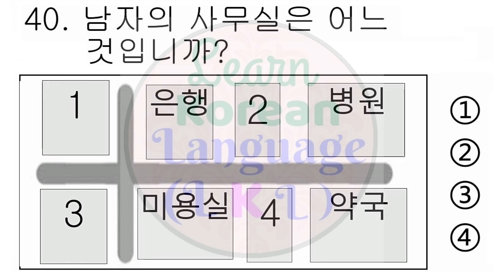39번. 가족이 모두 몇 명이에요? 다섯 명이에요. 저하고 남편, 그리고 아들이 세 명 있어요. 아들만요? 네, 그래서 딸이 한 명 더 있었으면 좋겠어요. 다시 들으십시오. 가족이 모두 몇 명이에요? 다섯 명이에요. 저하고 남편, 그리고 아들이 세 명 있어요. 아들만요? 네, 그래서 딸이 한 명 더 있었으면 좋겠어요.